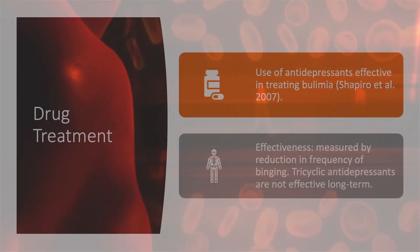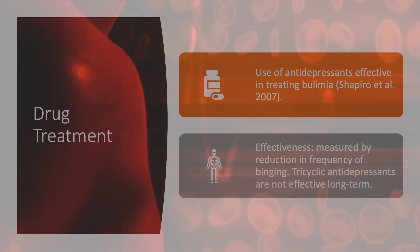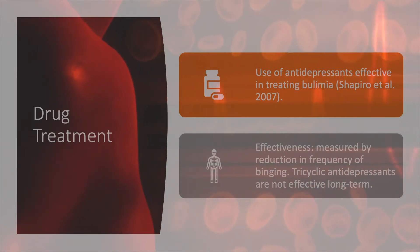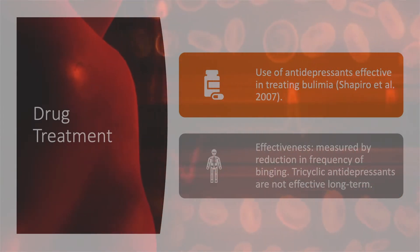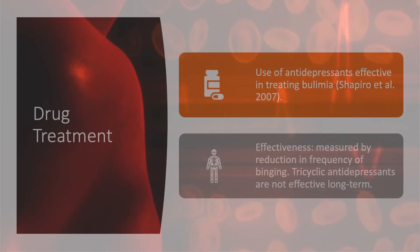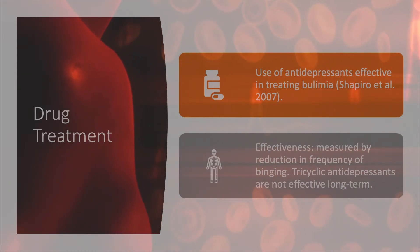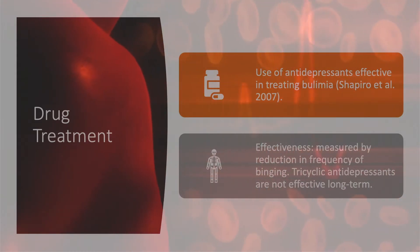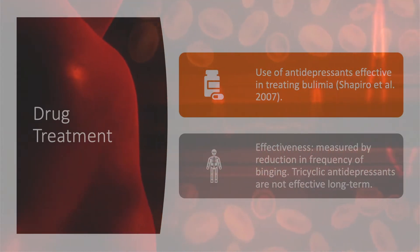Ways to treat eating disorders include drug treatment, whereby the use of antidepressants is effective in treating bulimia. Effectiveness is measured by reduction in frequency of binging. Tricyclic antidepressants, however, are not effective long term.